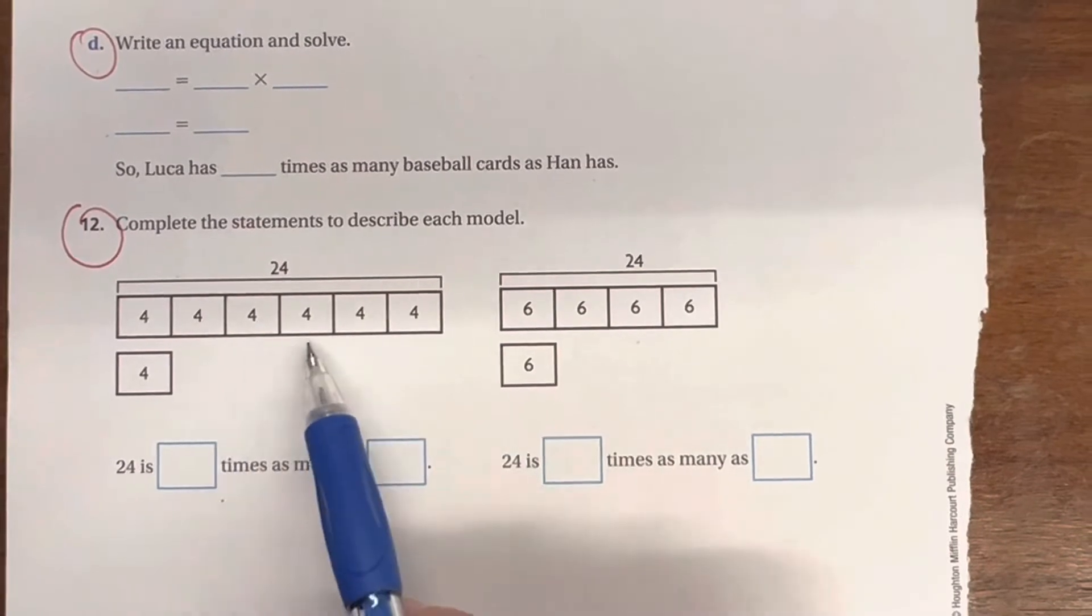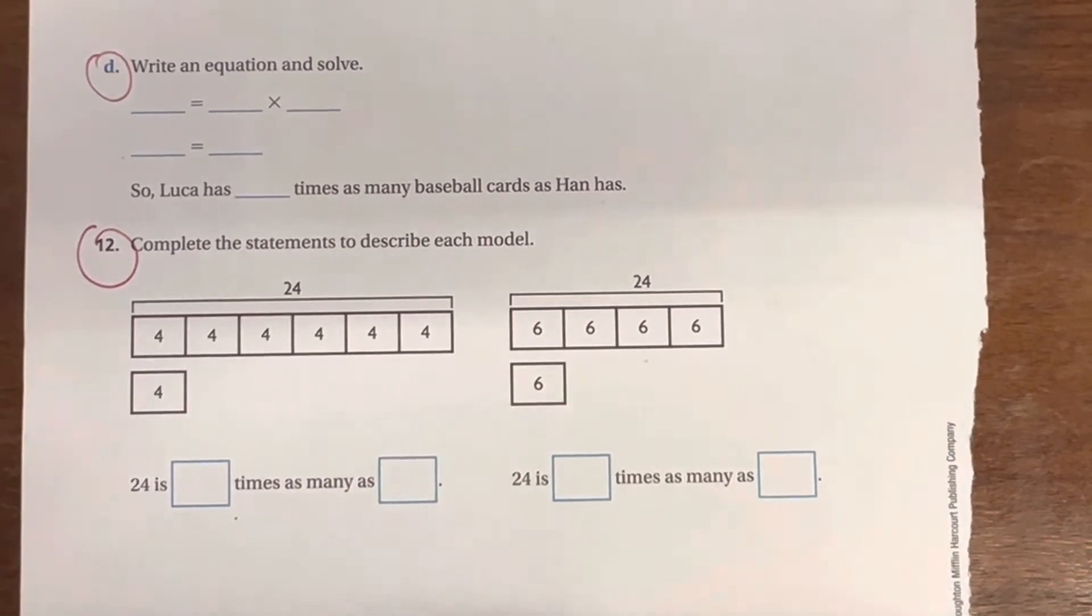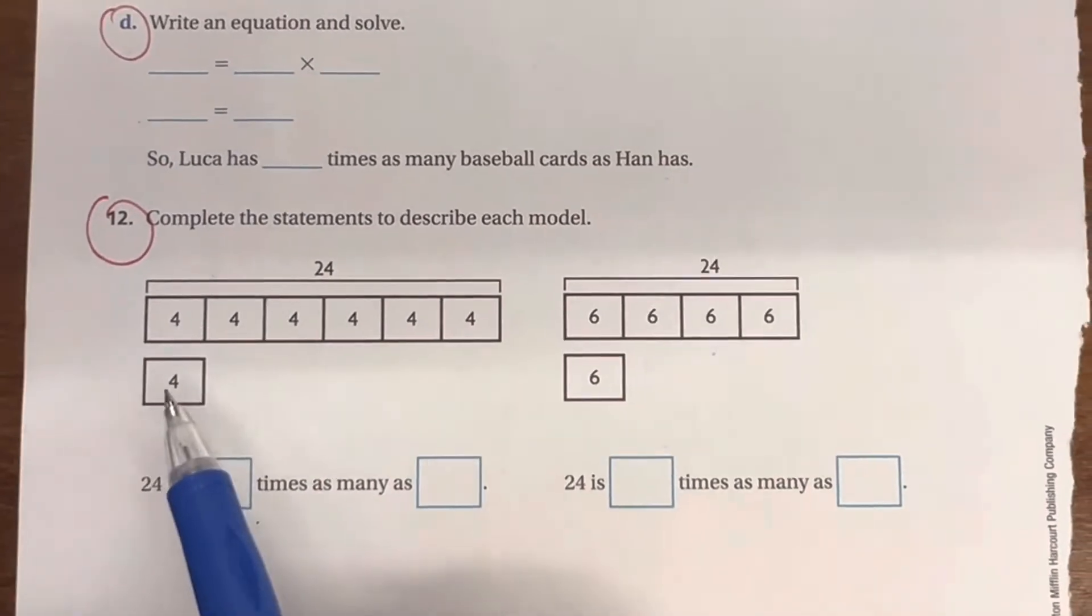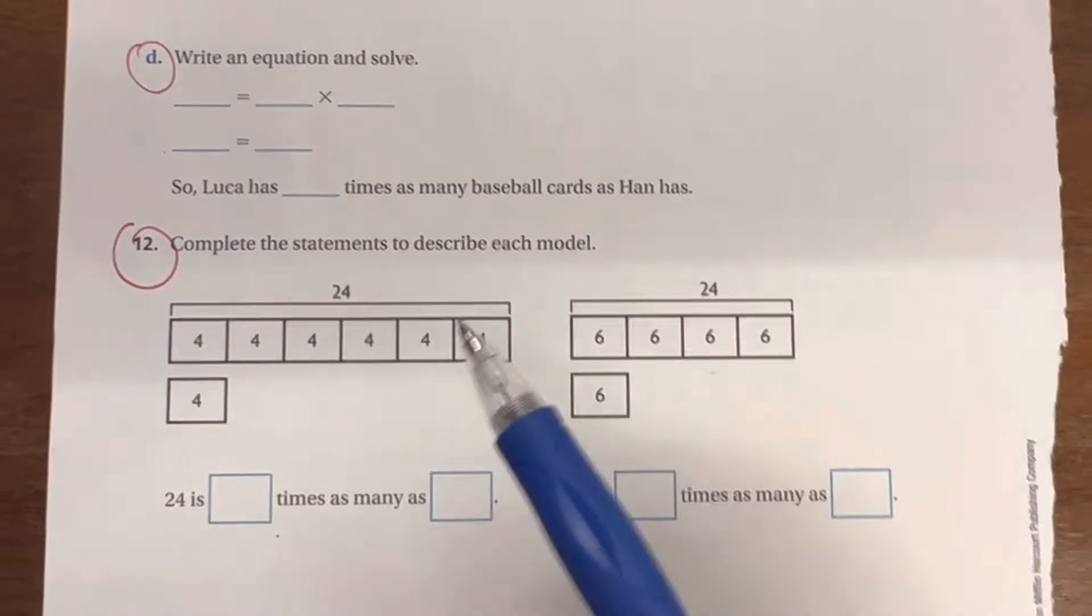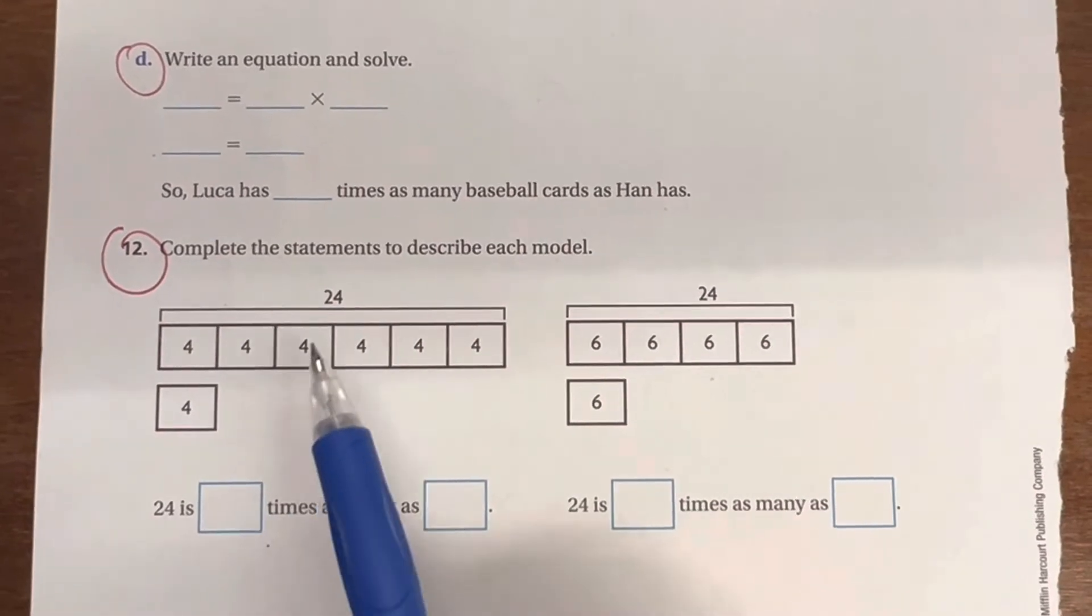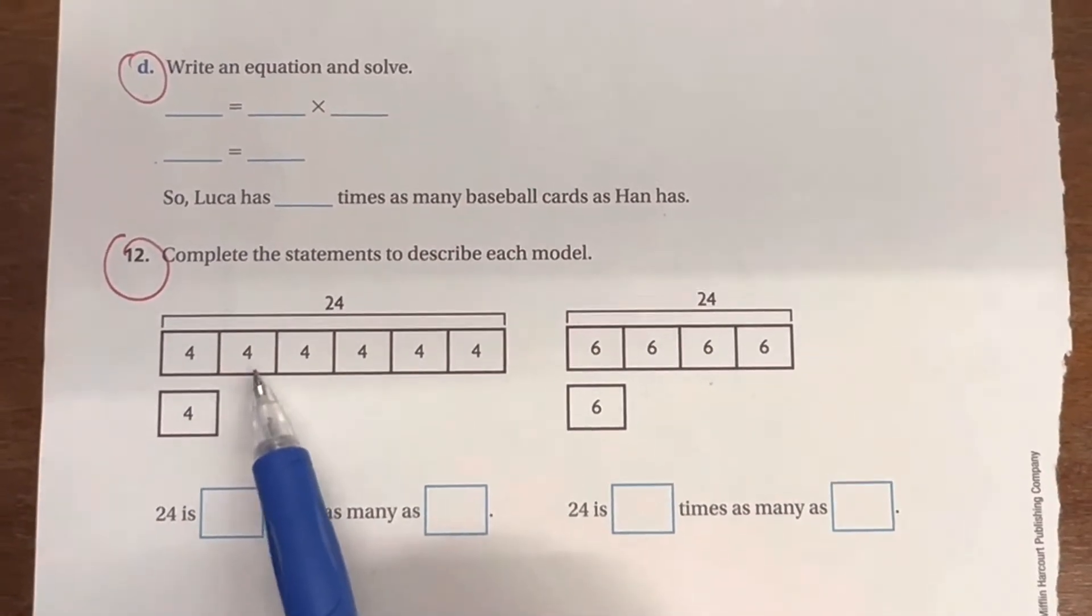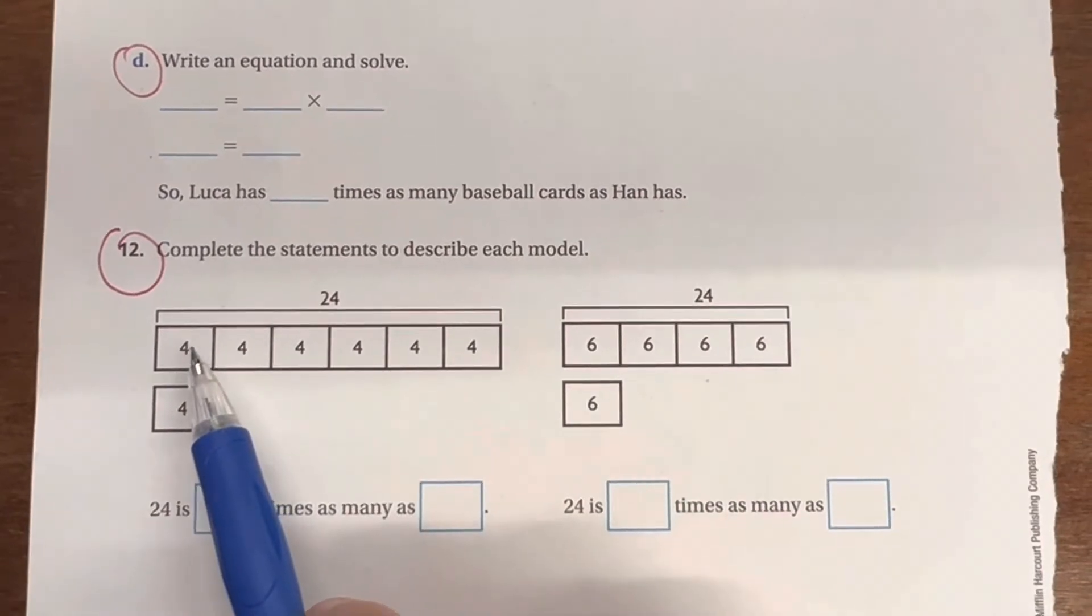This right here, you might be hearing about it being referred to as a tape diagram, so I wanted to show you how it works. So basically what this diagram is showing you is a multiplication equation. It's telling you that 24 is 6 times, and you grab the 6 because there's 6 boxes here.